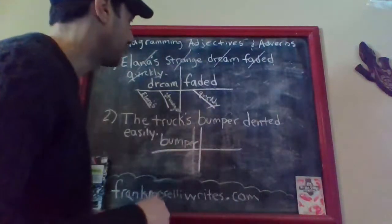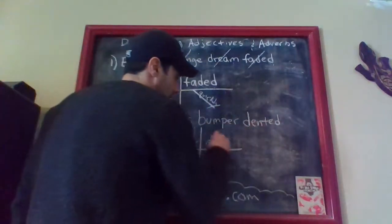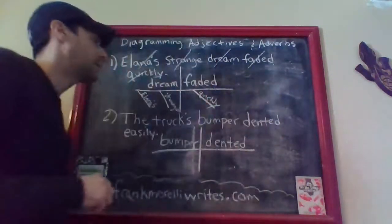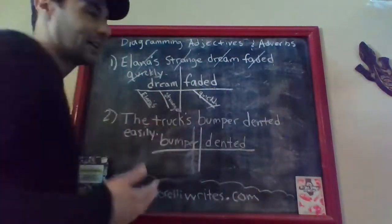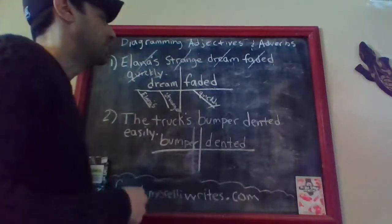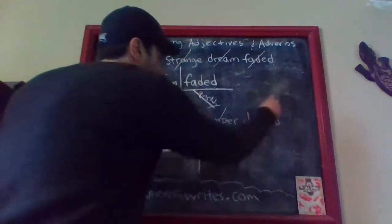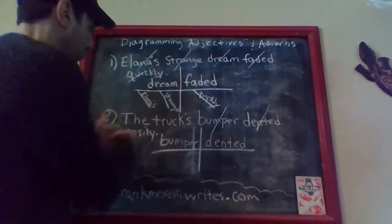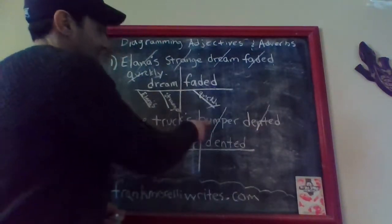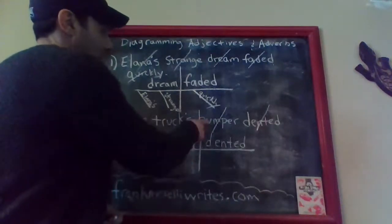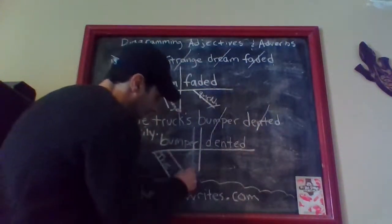So 'bumper' is your simple subject. Now you're going to try to find the verb. The bumper dented easily — 'dented' is an action verb, so 'dented' goes in your simple predicate spot. Try to see if there's a direct object: 'bumper dented what?' Well, 'easily' is not a real answer for that — it's not a noun — so therefore there's no direct object, which means there's no indirect object. We can eliminate the words already on the chart. We have 'the' and 'truck's,' and we have the word 'easily.' It's pretty obvious that 'the' and 'truck's' are telling us more information about the word 'bumper' — both of these words are adjectives, and you put them on the slanted lines coming off of the word they connect to.